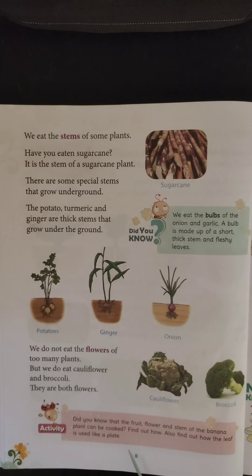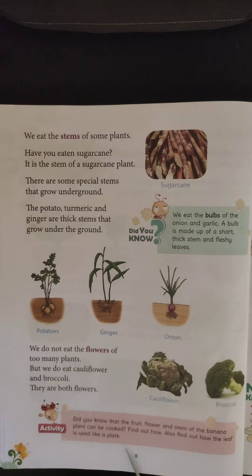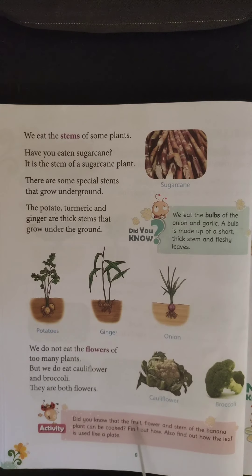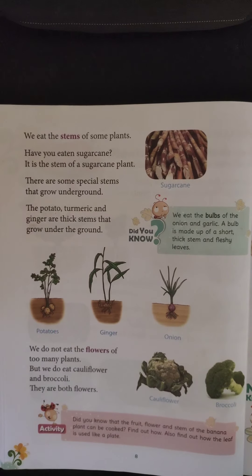One reason eating from banana leaf is healthy is that it absorbs certain pigments present in the leaf. When warm food is placed on banana leaf, it absorbs those pigments in a very small quantity, and those pigments help in producing certain vitamins in our body. You can ask your parents how the fruit, flower, and stem of the banana plant can be cooked.